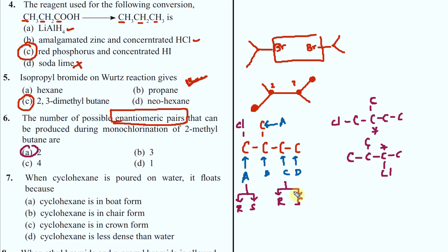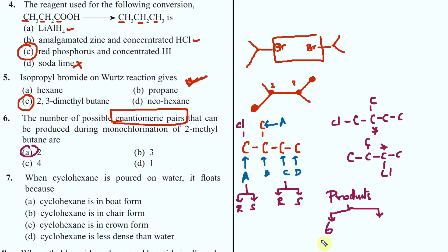How many molecules will you get? There are three types of questions I can ask you. How many products you will get? This position gives you two, this gives you one, this gives you two, this gives you one - so 1, 2, 3, 4, 5, 6 products including stereoisomers. Not including stereoisomers, four products. The two extra ones are the stereoisomers possible. The number of enantiomeric pairs is two - that is what this question asks. So read the question carefully - they are asking enantiomeric pairs.